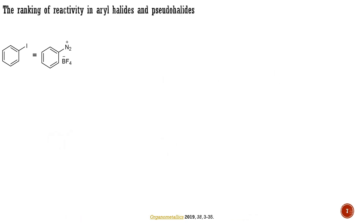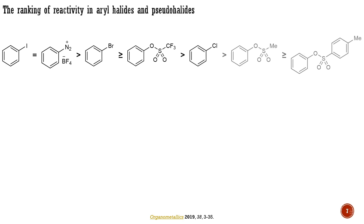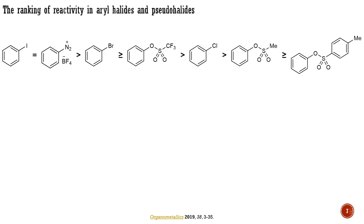Summarizing this section, the most reactive electrophilic coupling partners are aryl iodides and diazonium compounds. Unfortunately, they are not readily available, and additionally, diazonium compounds are explosive. The second-best electrophilic coupling partners, in terms of reactivity, are aryl bromides and aryl triflates. These compounds are notably more reactive than aryl chlorides, which in turn are more preferable than other sulfonates.